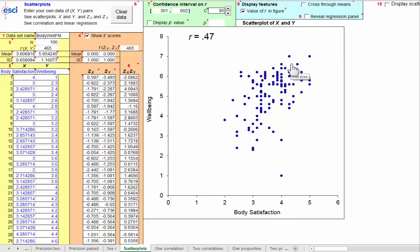But usually we want to do inference. We want to regard our 106 students as a random sample from some population of students, and these 106 data points as a random sample from some underlying population distribution.